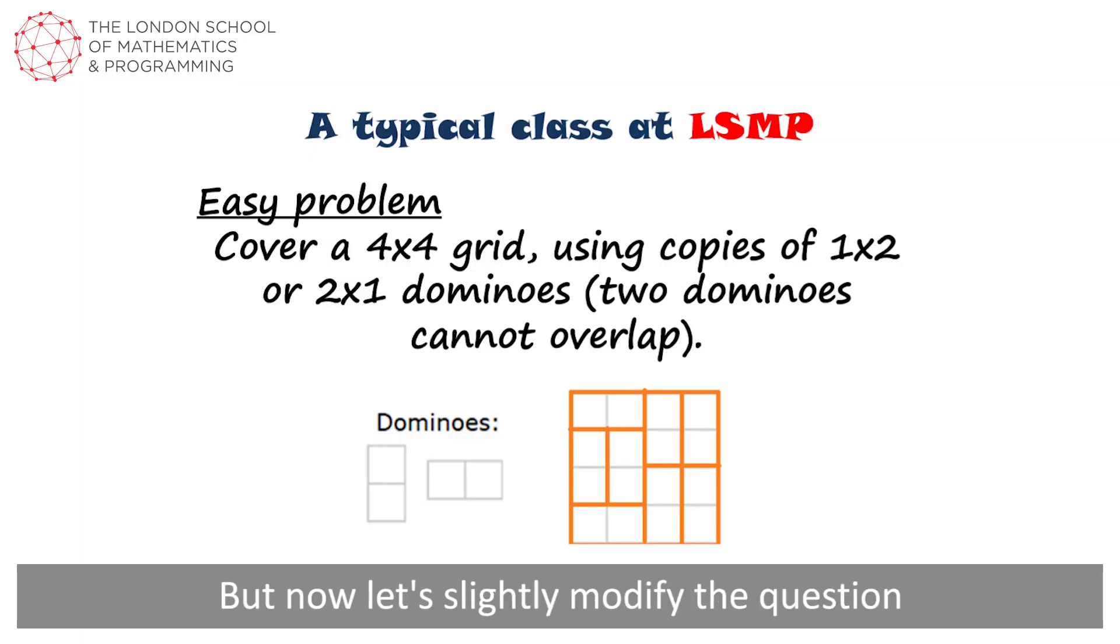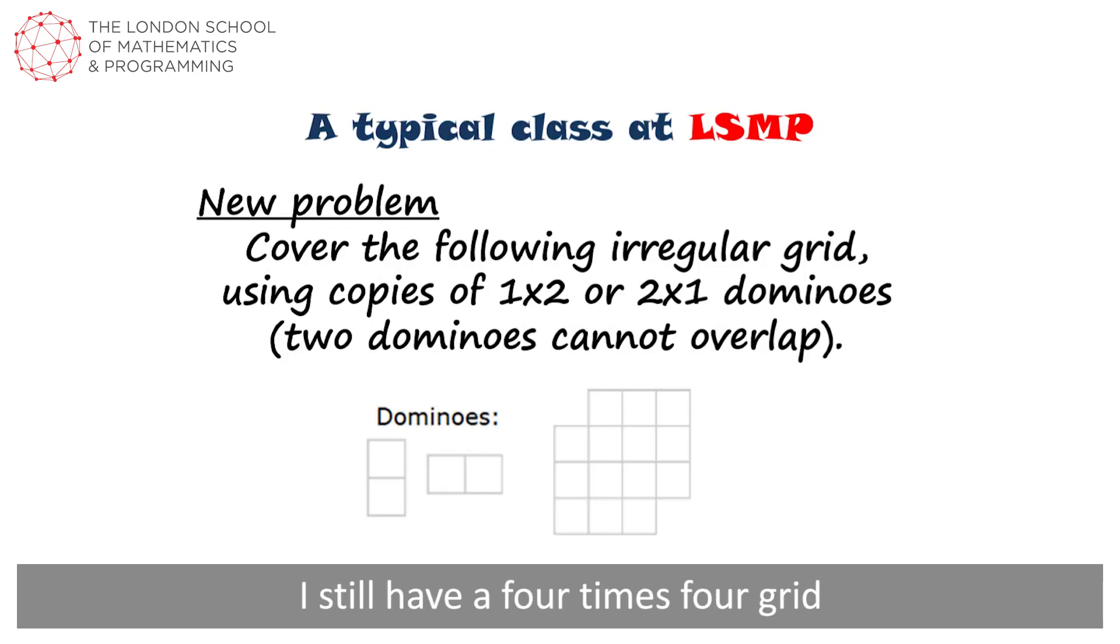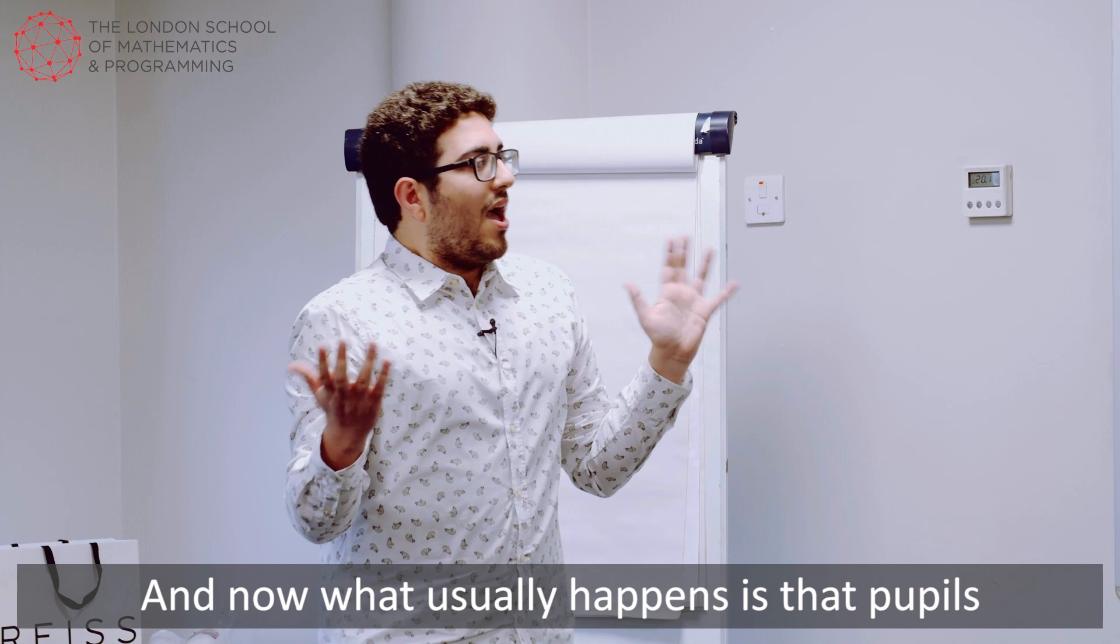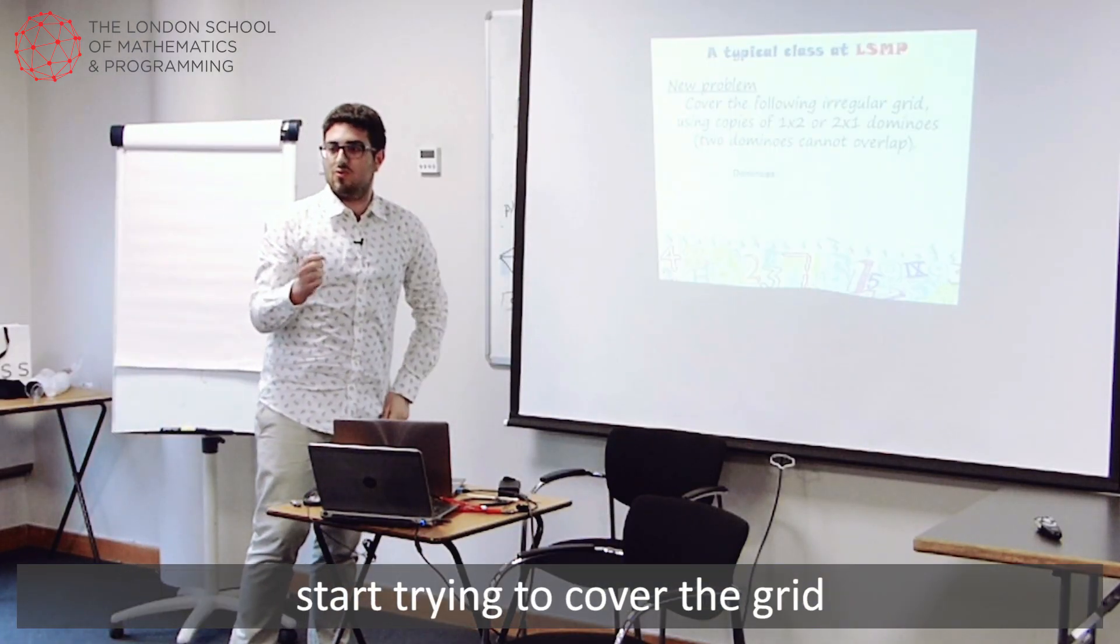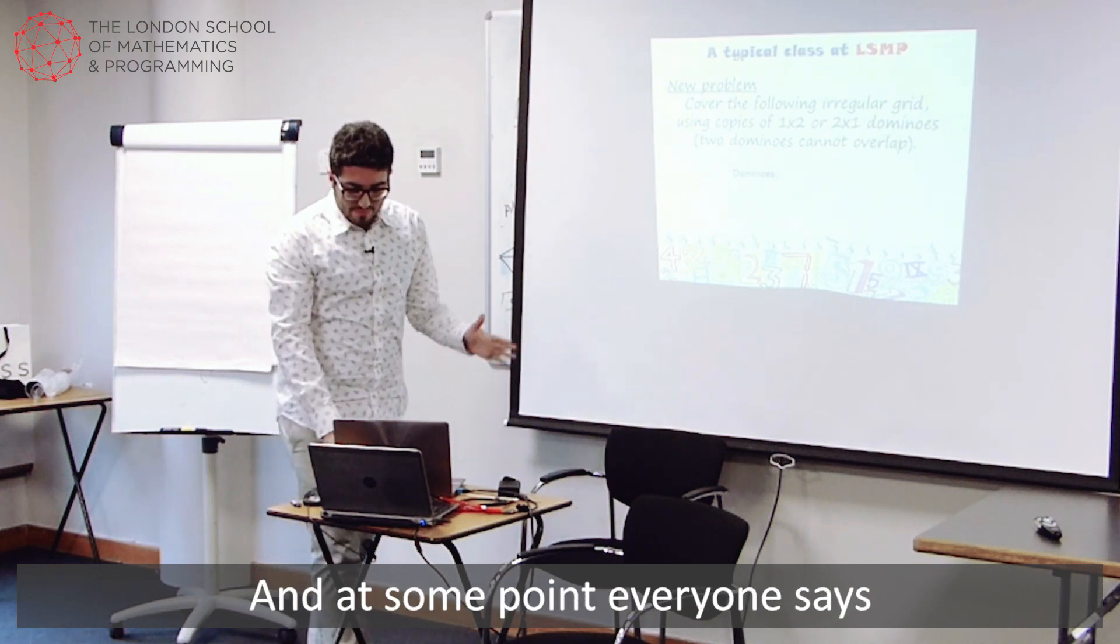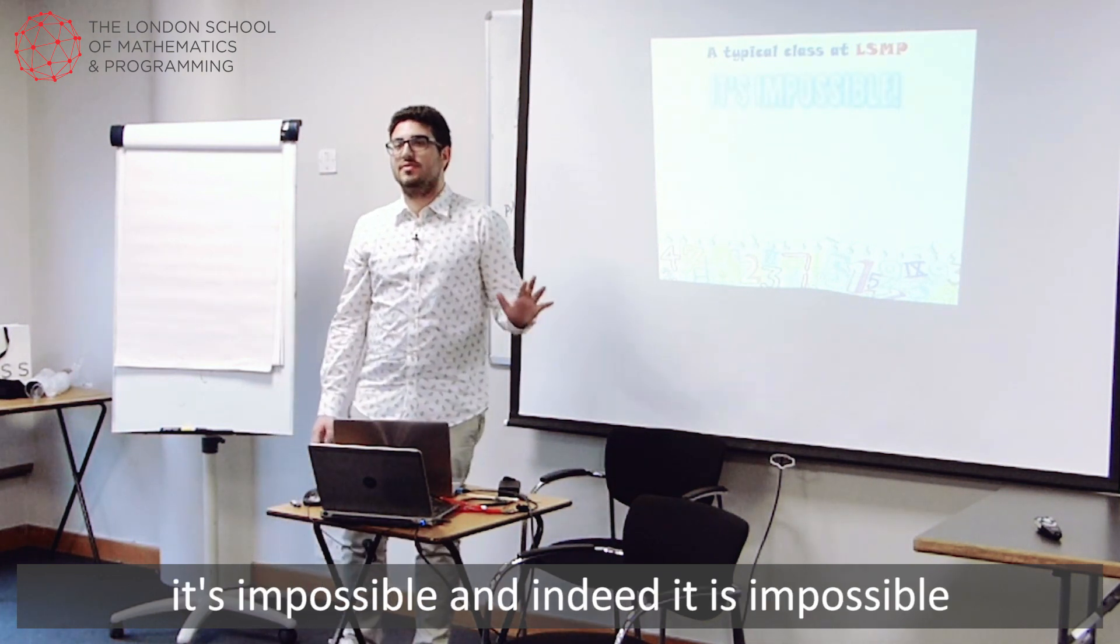But now let's slightly modify the question. So I still have a four times four grid, but this time I remove two opposite corners. And the question is the same. Cover it using dominoes. And now what usually happens is that pupils start trying to cover the grid. And at some point everyone says, oh, it's impossible.